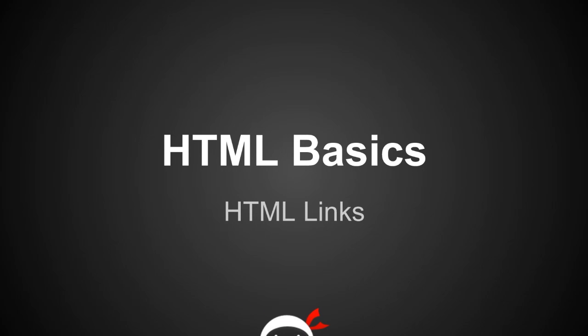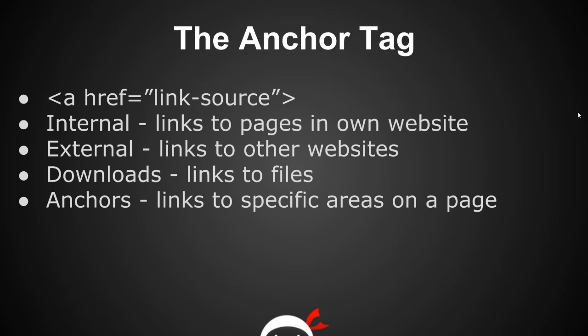I'm Sean from the Net Ninja and this is HTML Basics lesson 10 — HTML links. We make links to other websites, your own website, or anything at all using what's called the anchor tag. The way we do this is by specifying an 'a' tag, then putting in the attribute 'href', which stands for hypertext reference. You don't need to remember that — you just need to remember to put the attribute href, then put the link source within double quotes.